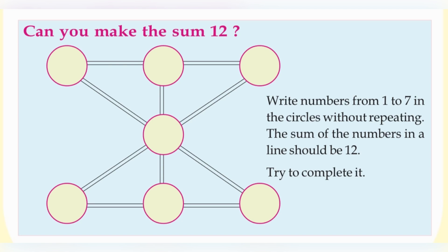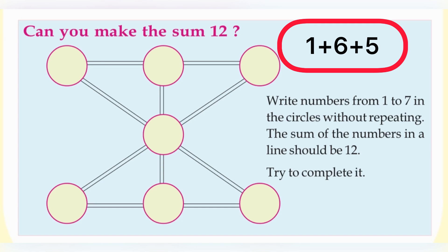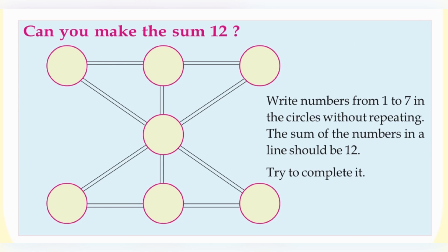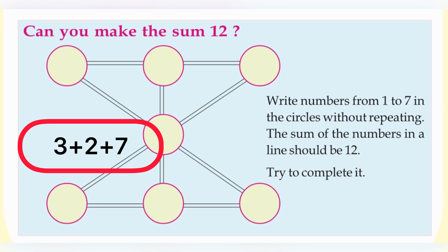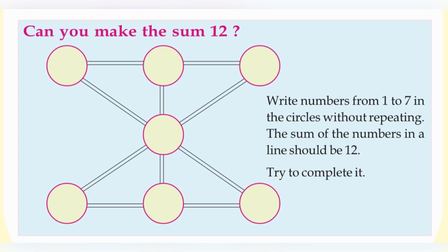For doing this, find out which numbers give the sum 12. Let's check some examples. 1 plus 6 plus 5: 1 plus 6 is 7, and 7 plus 5 is 12. Another one: 3 plus 2 plus 7 — 3 plus 2 equals 5, and 5 plus 7 equals 12. Another one: 6 plus 4 plus 2 — 6 plus 4 equals 10, and 10 plus 2 equals 12.